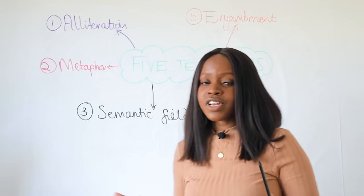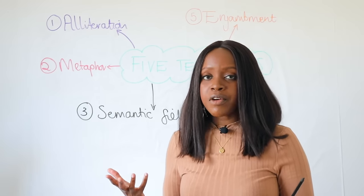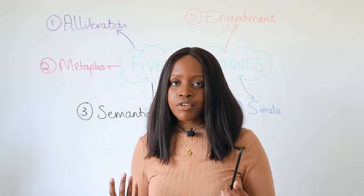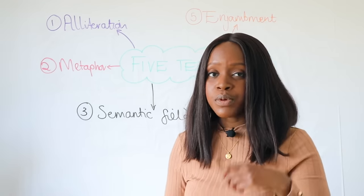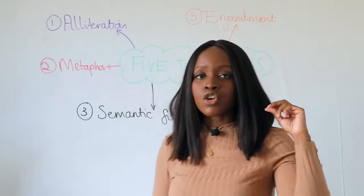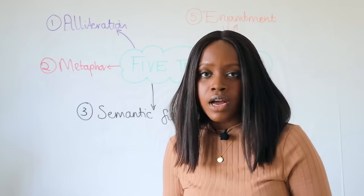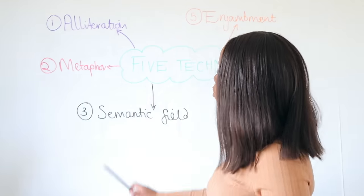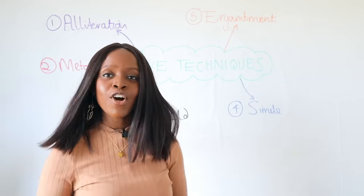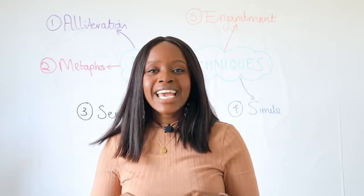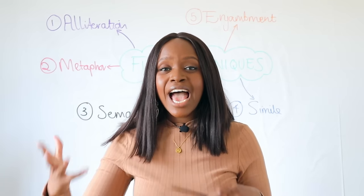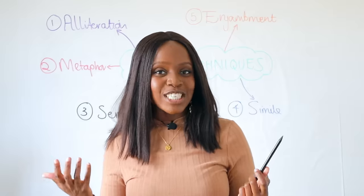To quickly recap: if you're preparing especially for unseen poetry, these are the five things to anticipate in any poem. Whether it's unseen or seen poetry, these are the five main techniques you can always bank on: number one, alliteration; number two, metaphor; number three, semantic field; number four, simile; and number five, enjambment. Hopefully that helps make the process of preparing for poetry assessments less stressful.